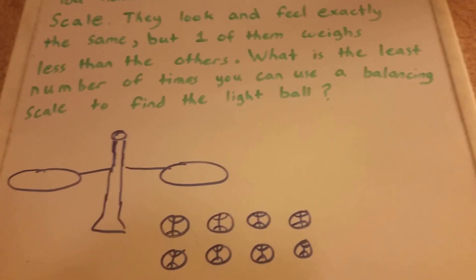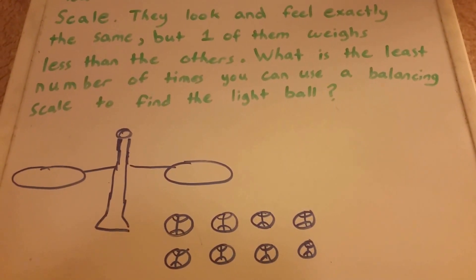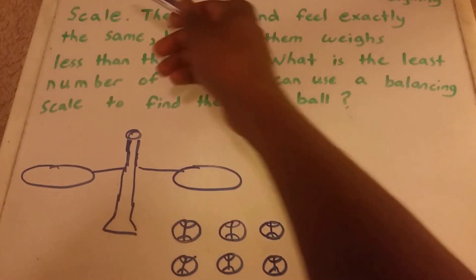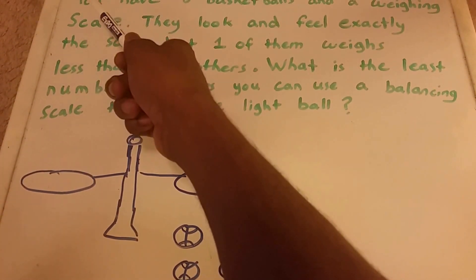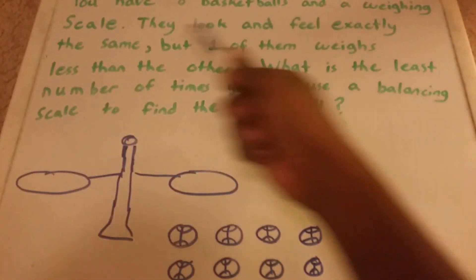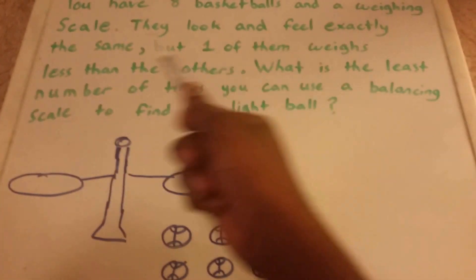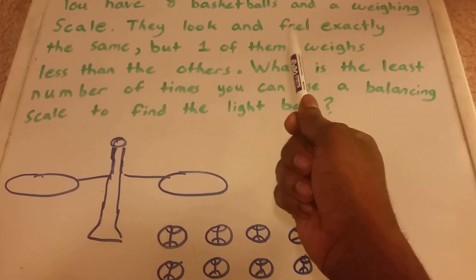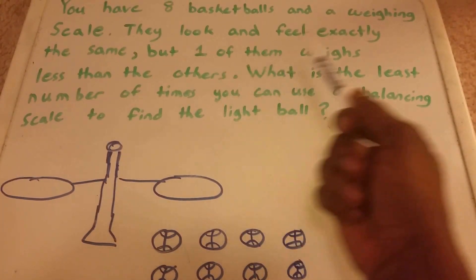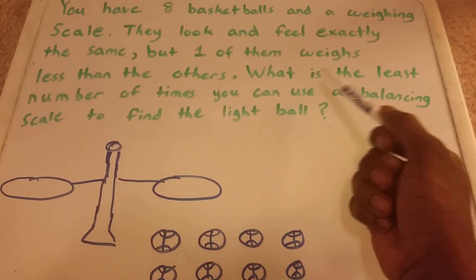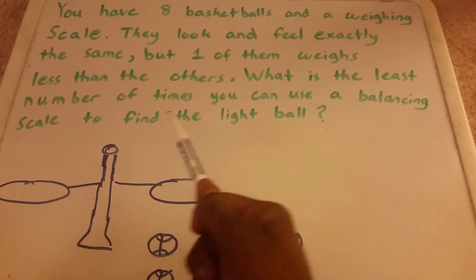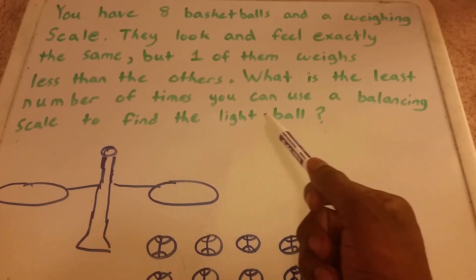Hey guys, so I have an interesting question here. It's a puzzle and it's used a lot in interviews. The scenario goes like this: you have eight basketballs and a weighing scale. They look and feel exactly the same, but one of the balls weighs less than the others. The question is, what is the least number of times you can use a balancing scale to find the light ball?